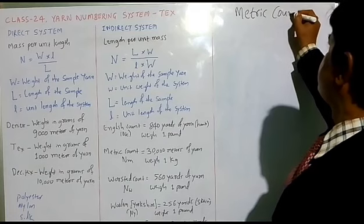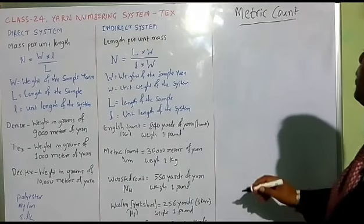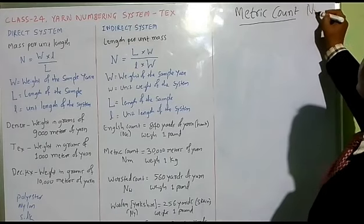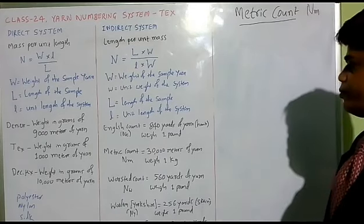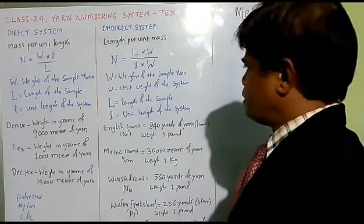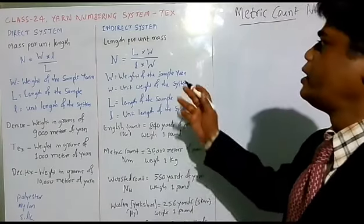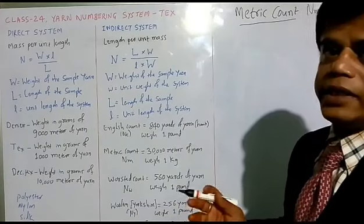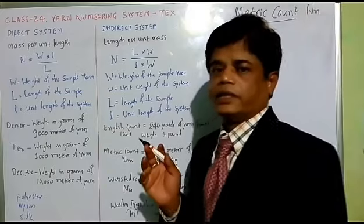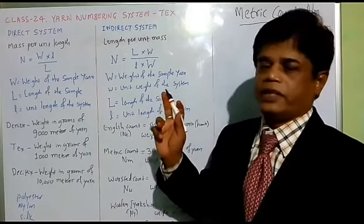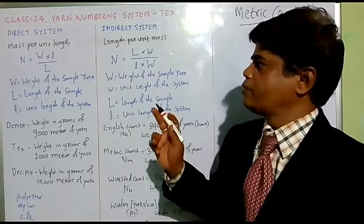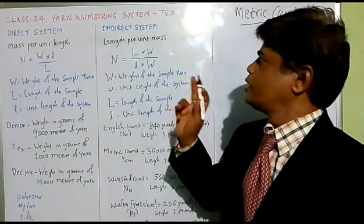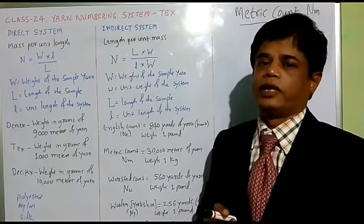This metric count is expressed with the symbol NM. This metric count comes under indirect system. Direct system is expressed in terms of mass per unit length, but indirect system is length per unit mass.